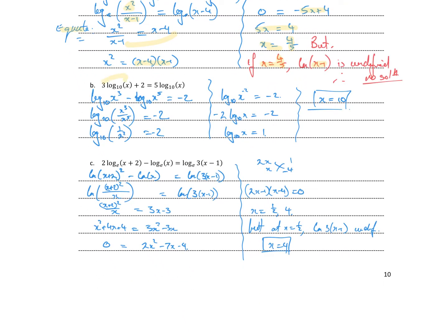Bring the 3 out the front so we get x cubed, and put the log across to the left hand side as minus log base 10 of x to the power of 5. That equals minus 2. Now with log expressions on the left hand side I can bring them together: log base 10 of x cubed over x to the 5, which simplifies to 1 over x squared, or x to the minus 2. I bring that minus 2 out the front, divide both sides by minus 2, and get log base 10 of x equals 1. Using the log-index transformation, x equals 10 to the power of 1, so x equals 10.